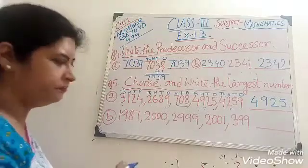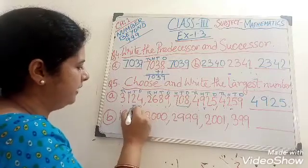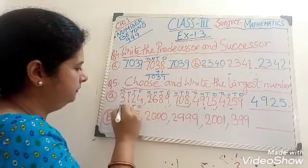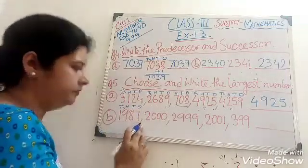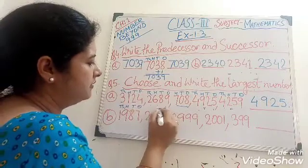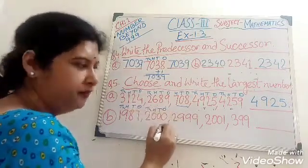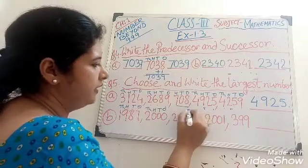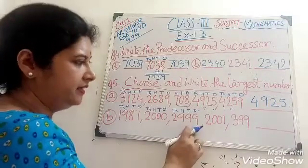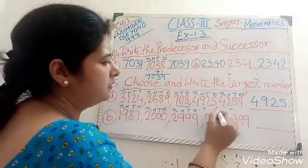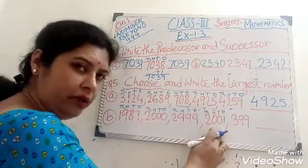Come to the next question. Do the same. Again, 1, 10, 100, 1000 — for each number. It is 1,987. Next, 2,000. Next, 2,999. And 2,001.